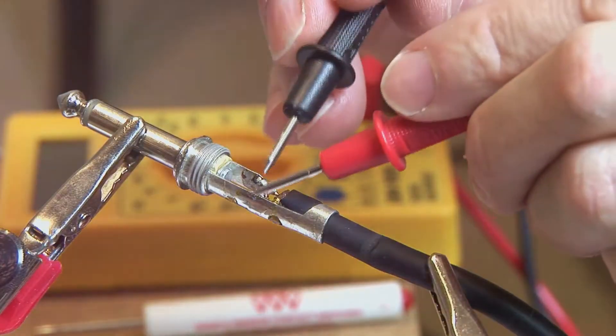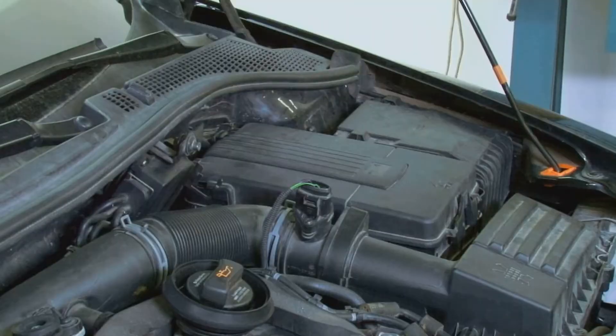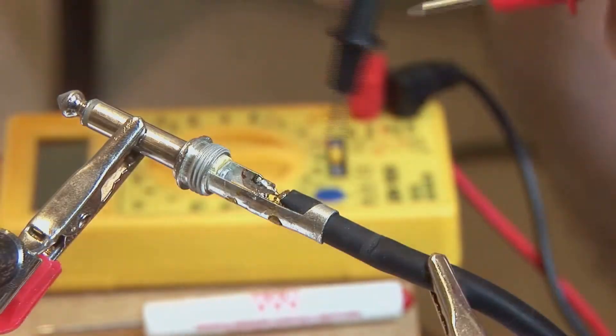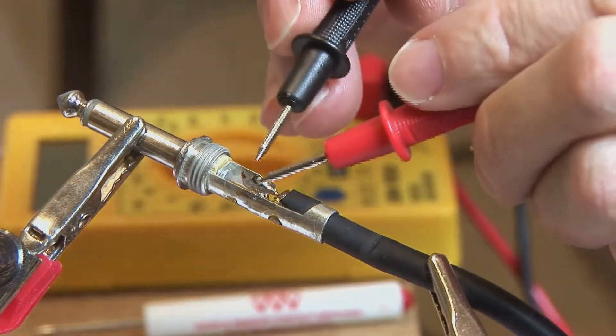Solenoids are everywhere. They're in your car starting the engine and popping the trunk. You'll find them in doorbells, washing machines, even pinball machines. But like any hard worker, solenoids can wear out.